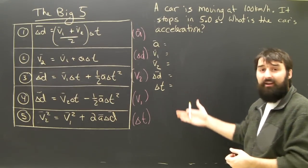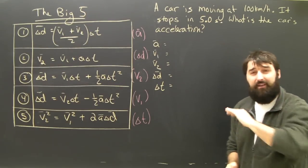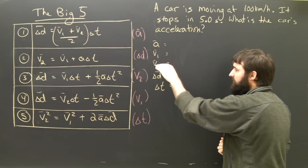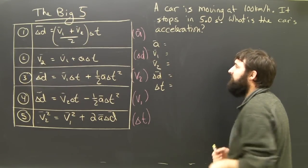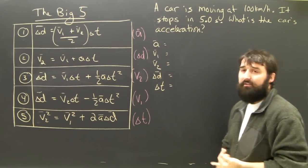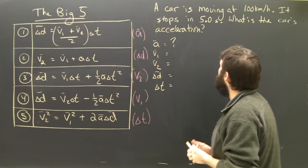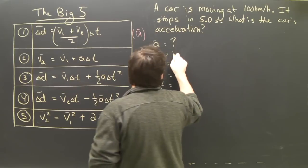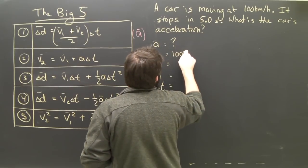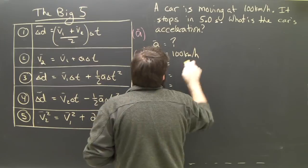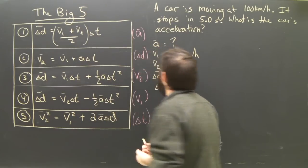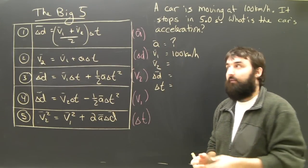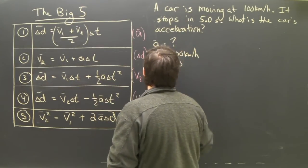I've already written down my five variables because I do that every single time: A, V1, V2, D, and T. What is A? We don't know. What is V1? The initial velocity of the car is 100 kilometers an hour. What is V2? It stops, so obviously V2 is equal to zero.